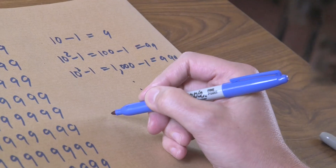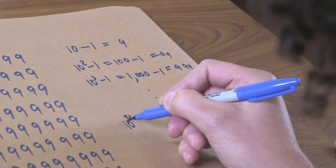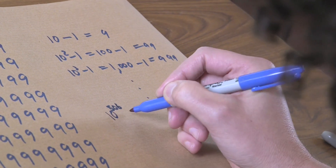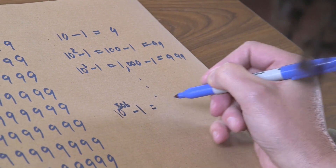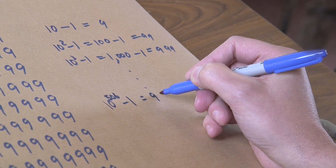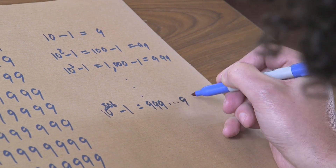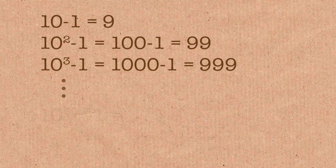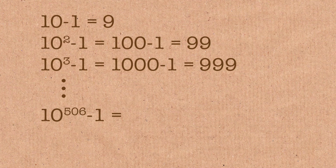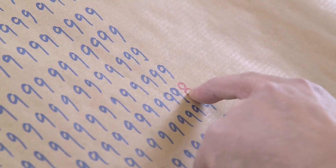We can then say 10 to the 506, take 1, is equal to 999...999 — where this happens to be 506 digits. So that's kind of that, except for that glitch. I know it's a small change, but that actually changes the value of the number quite a lot.